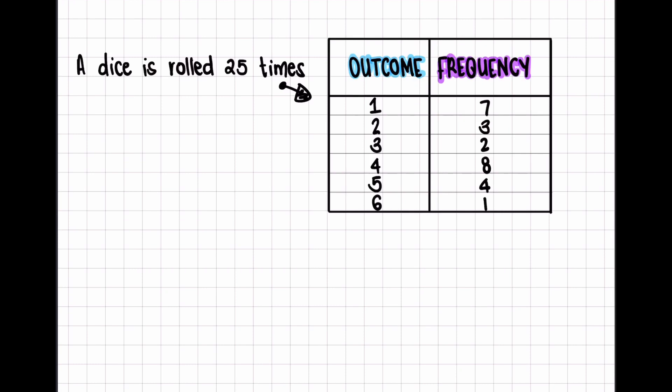The frequency is the number of times it actually landed on that number. So it landed on a one seven times, it landed on a three twice, it landed on a five four times. And in total, the dice was thrown 25 times.